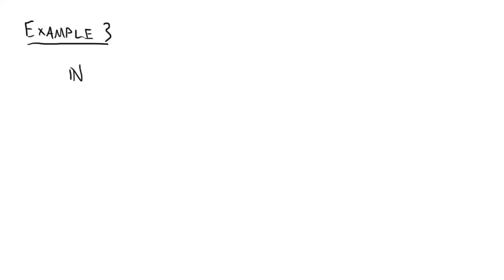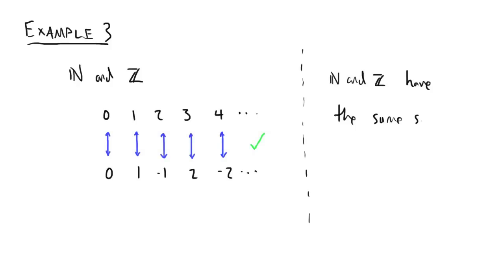It turns out that we can. By ordering the integers so that they alternate between positive and negative, we can pair them up with the natural numbers. Therefore, N and Z actually have the same size.